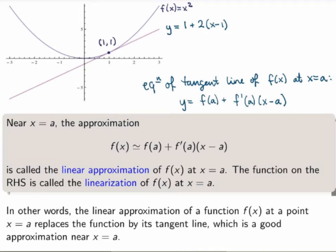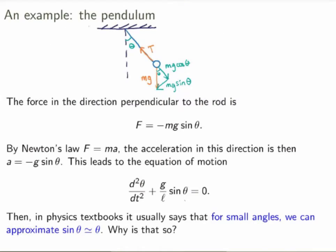But it turns out to be very useful, and if you have ever studied the pendulum in physics then you've already used that without knowing about it. So let's look at the pendulum. A pendulum is basically a massless rod, an ideal pendulum would be a massless rod with a mass here attached, and then we let the mass oscillate here around the vertical direction.